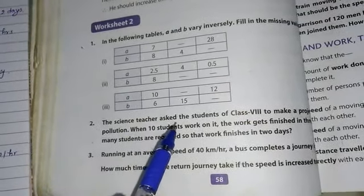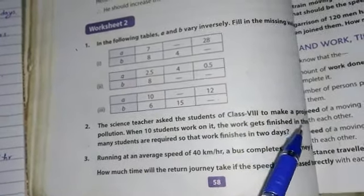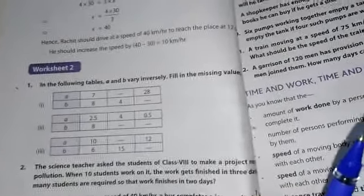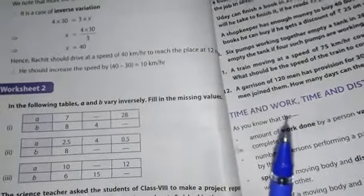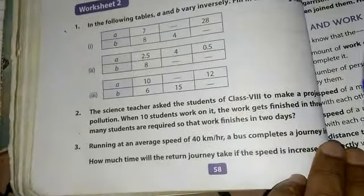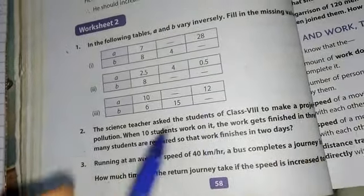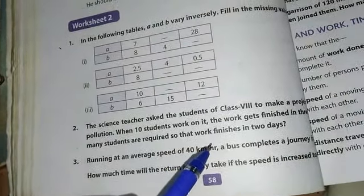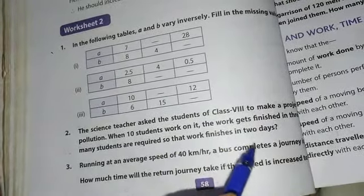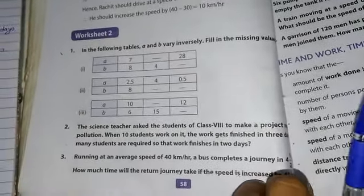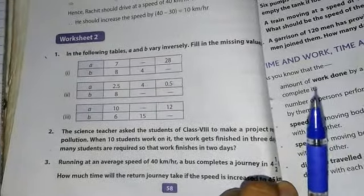The science teacher asked the students of class 8 to make a project report on pollution. When 10 students work on it, the work gets finished in three days. How many students are required so that the work finishes in two days?